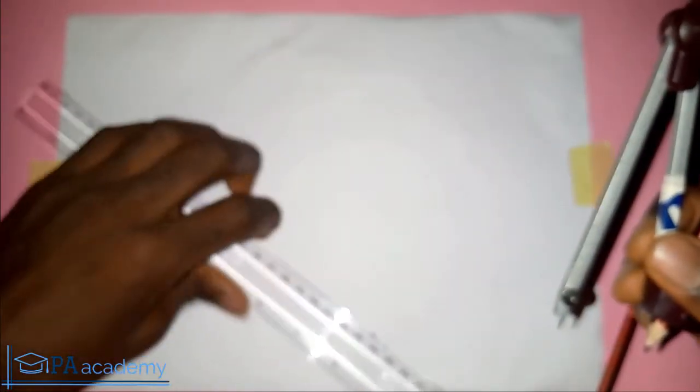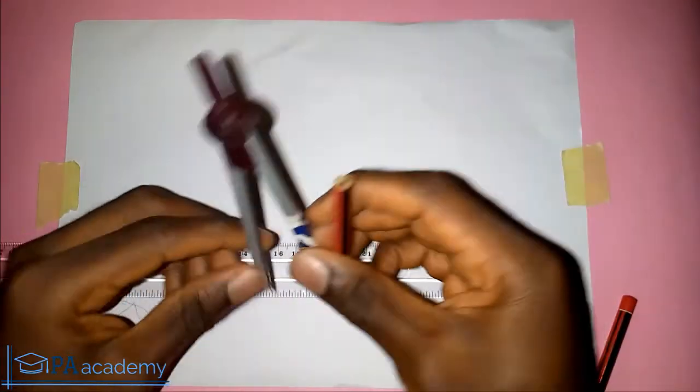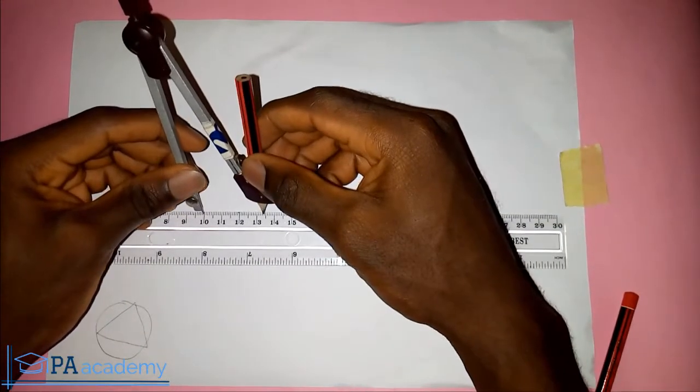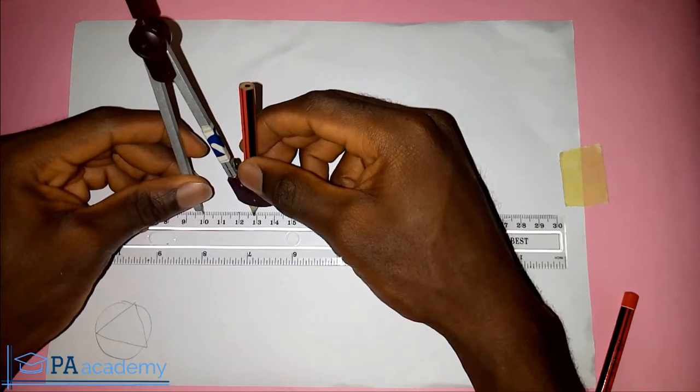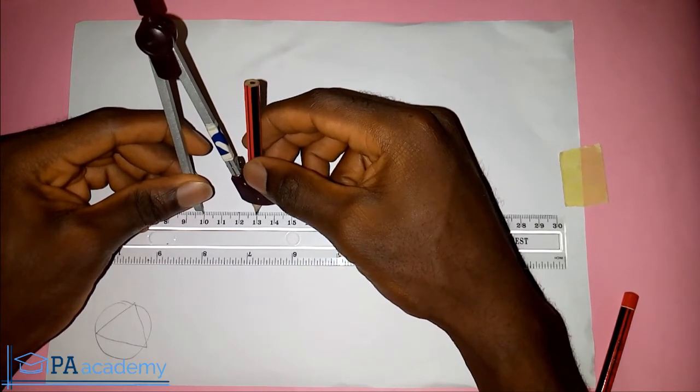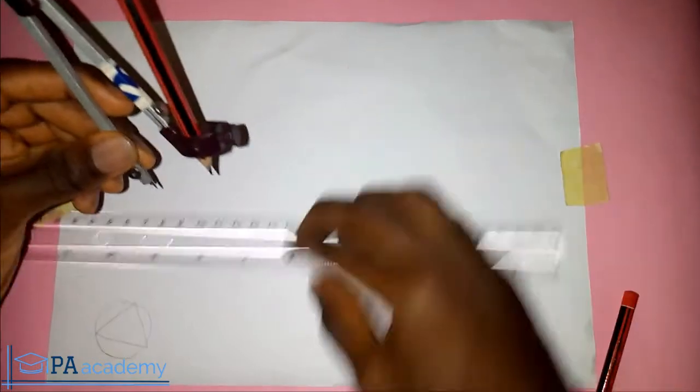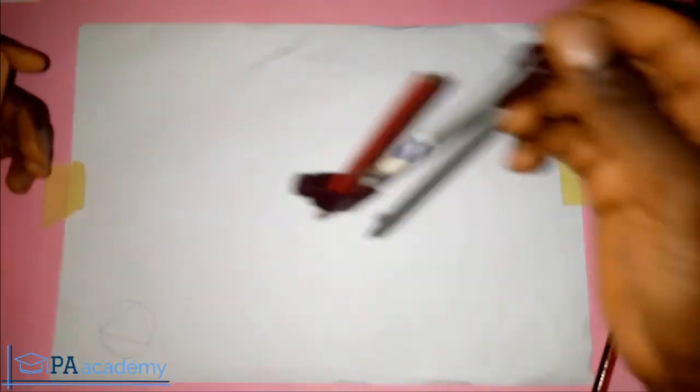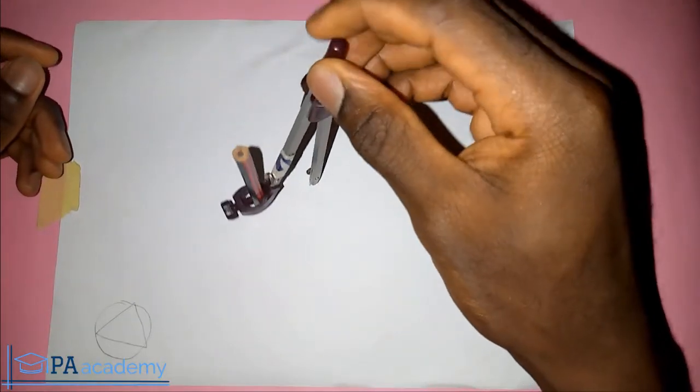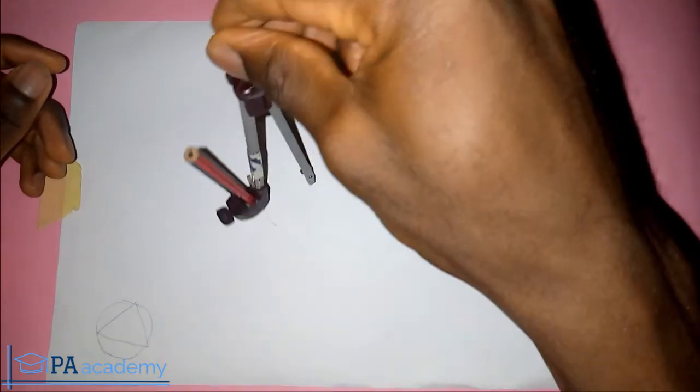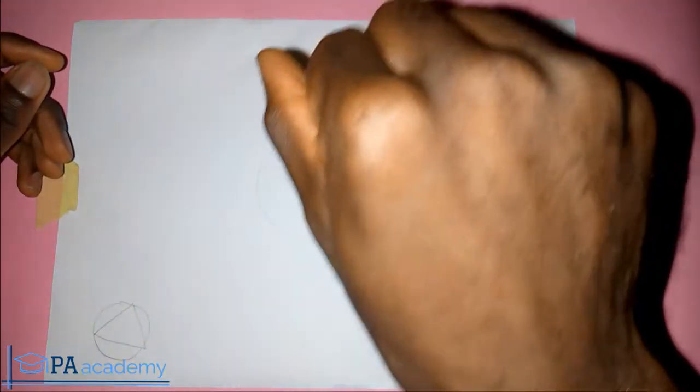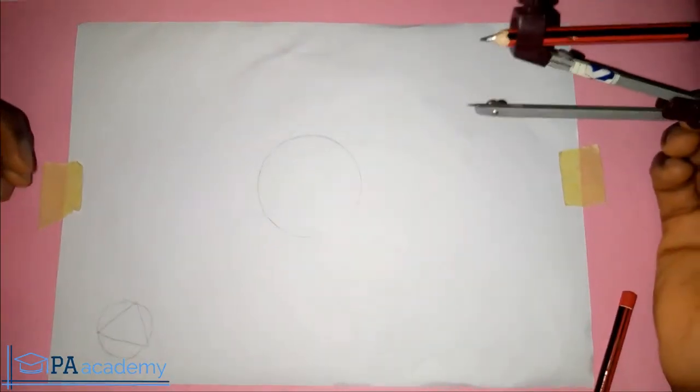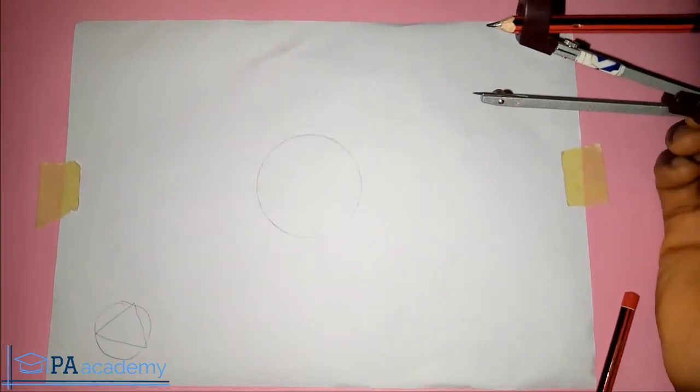So to start with, I'm going to be drawing the circle. So I'm going to be using a circle of radius three centimeter. So let me do that. So three centimeter is the same as three millimeter. So now let me draw the circle. So now this is our circle of three millimeter.